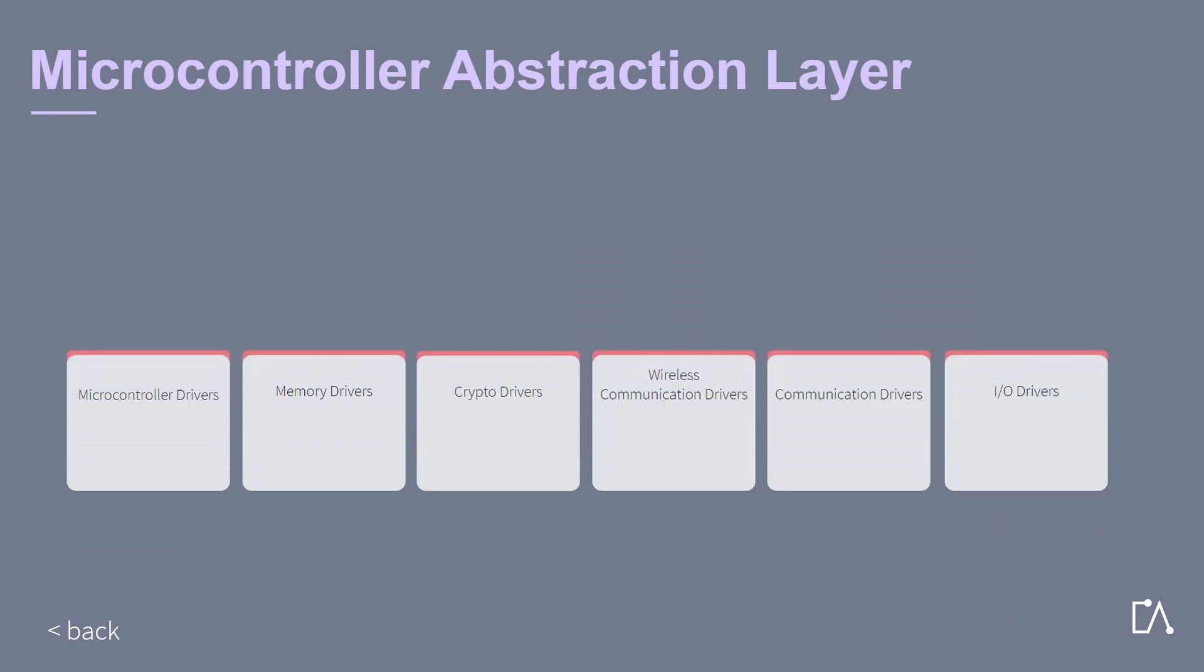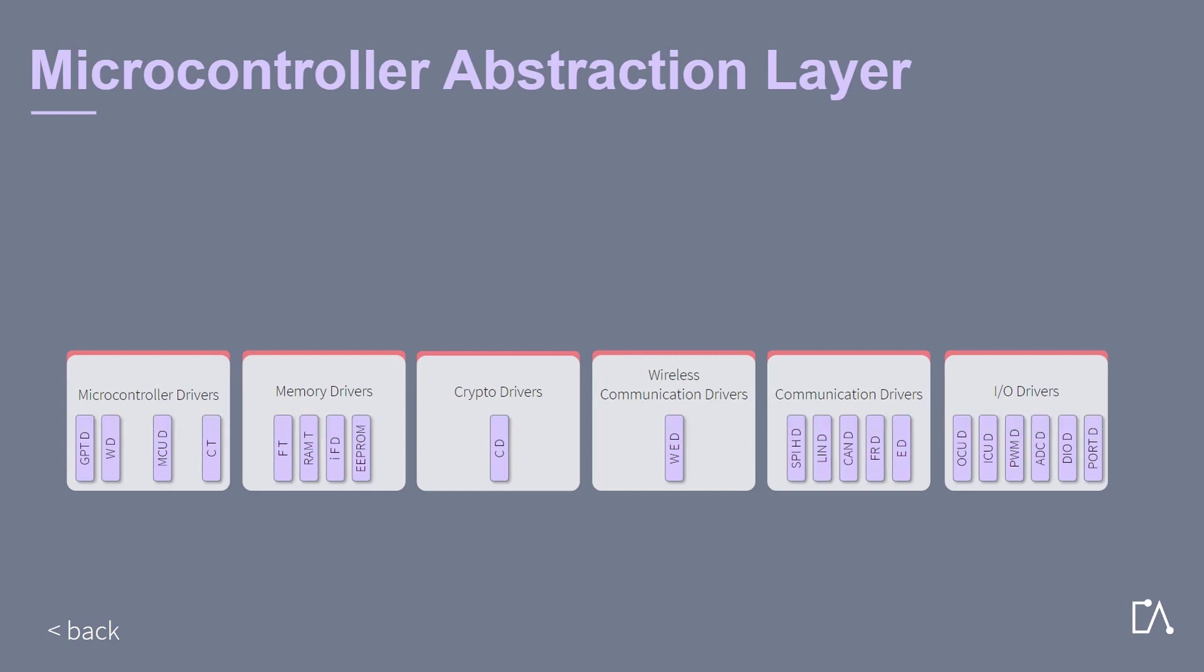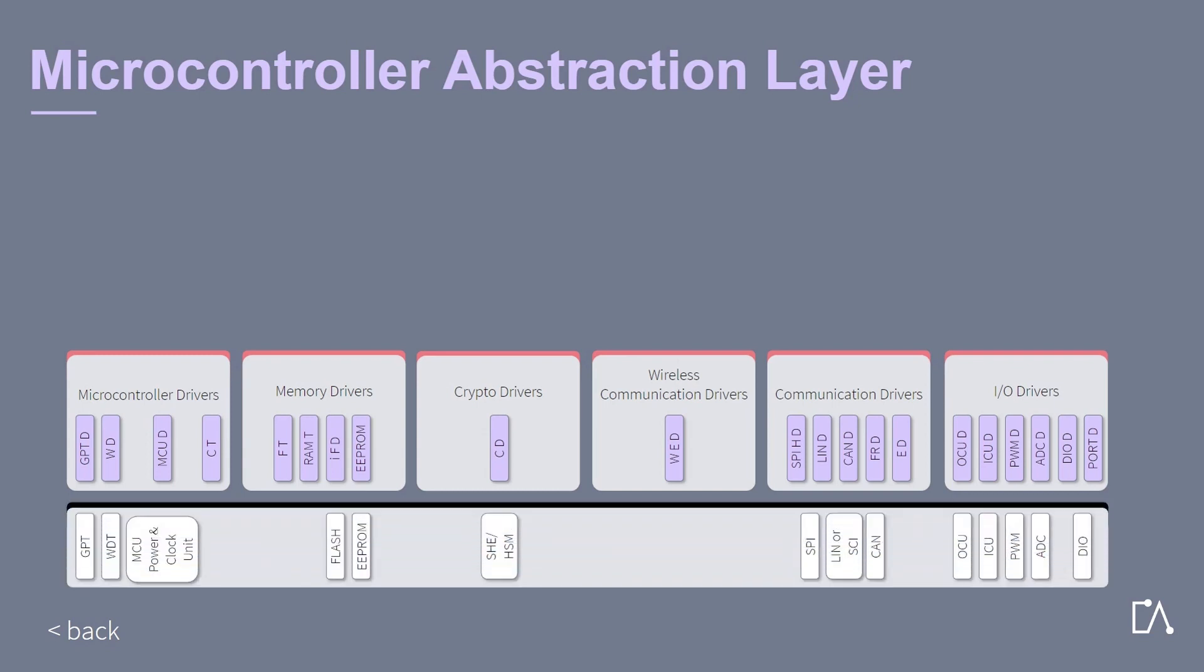The microcontroller abstraction layer is divided into six module groups, which group software modules of similar type. In this case, the software modules are internal drivers. A driver is a software module with direct access to peripherals. The internal peripheral devices are shown in the hardware layer.